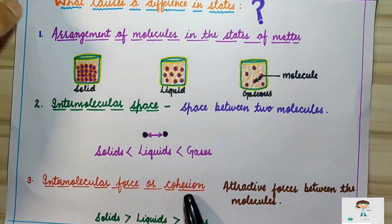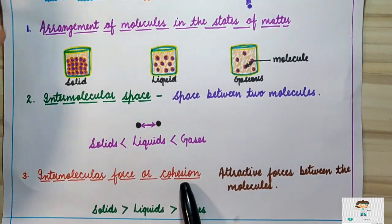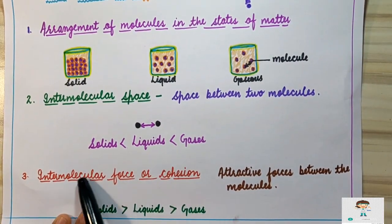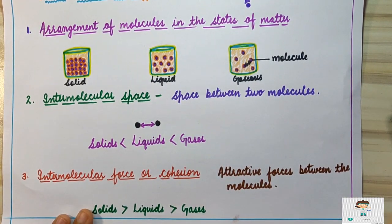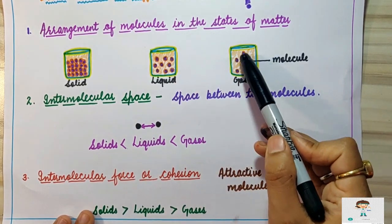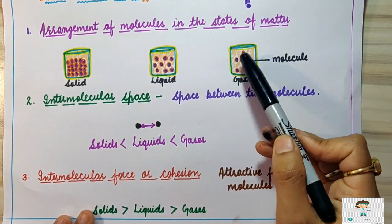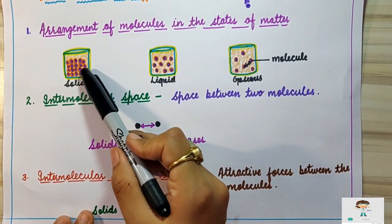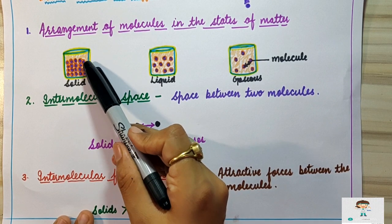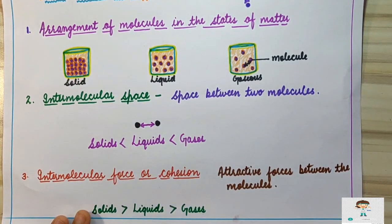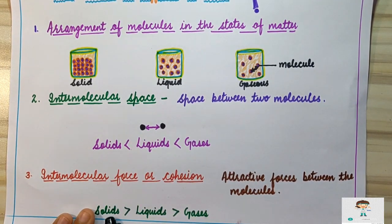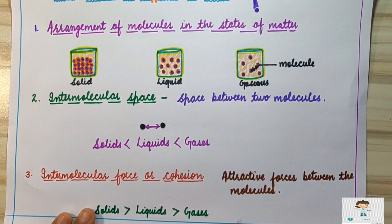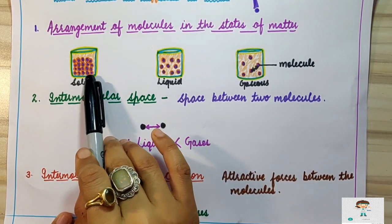The third factor is intermolecular force, also known as force of cohesion — the attractive forces present between molecules. In solid state, the attractive forces are more because solid particles are tightly and closely packed, so molecules have more interactions with each other.